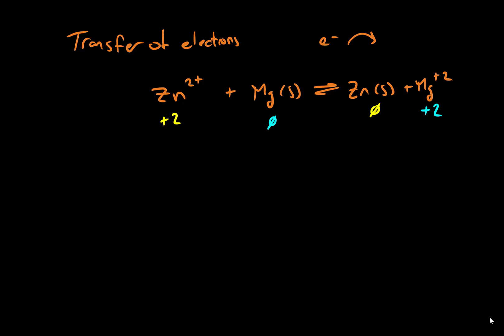Let's go ahead and break this reaction down into two simpler reactions that show exactly how electrons are moving. We're going to call these our two half reactions. In the first half reaction, we're thinking only about zinc — zinc starts as plus two and it ends up as a zinc solid.